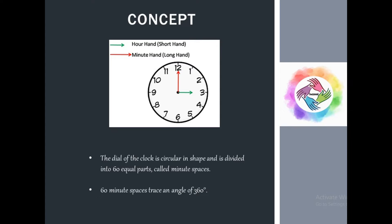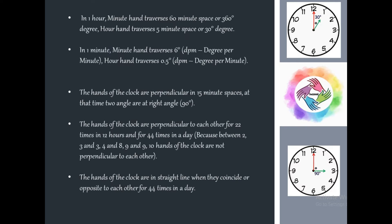60 minute spaces span an angle of 360 degrees. So in 360 degrees there are 60 minute spaces. Each one minute space is therefore 360 divided by 60, which equals 6 degrees.